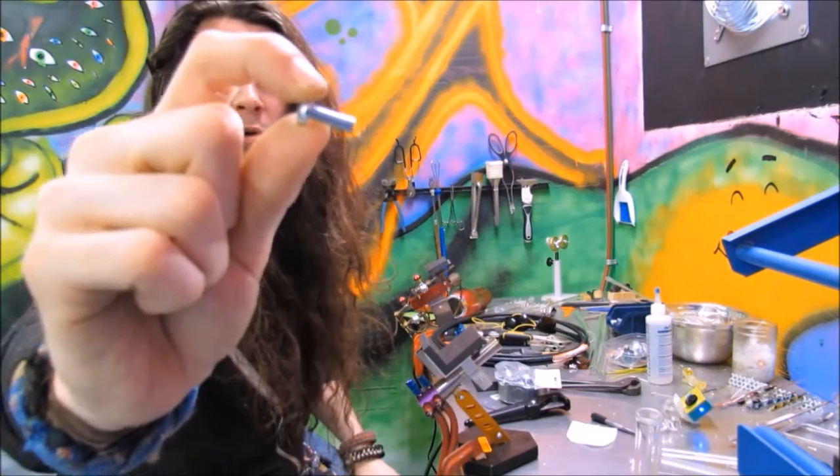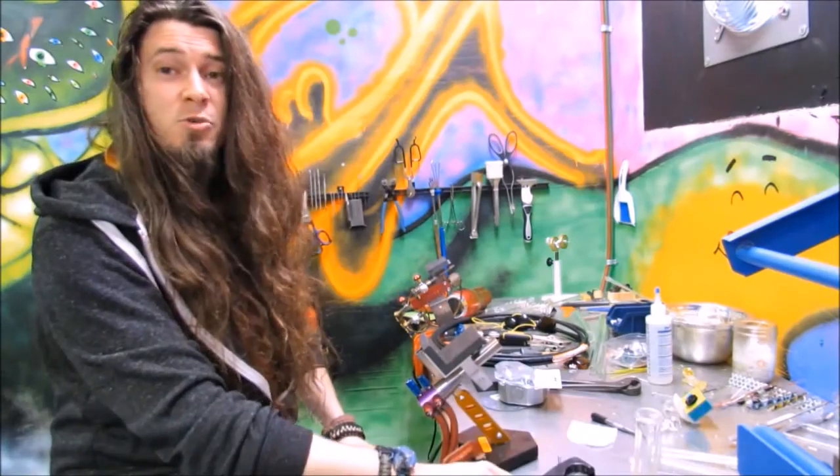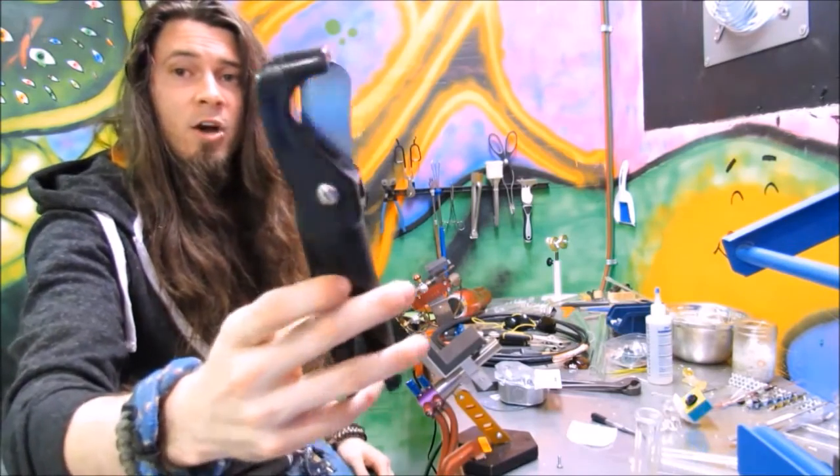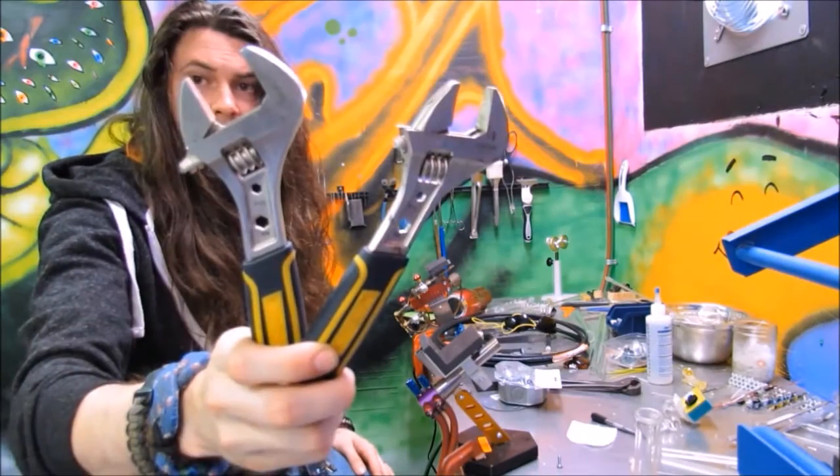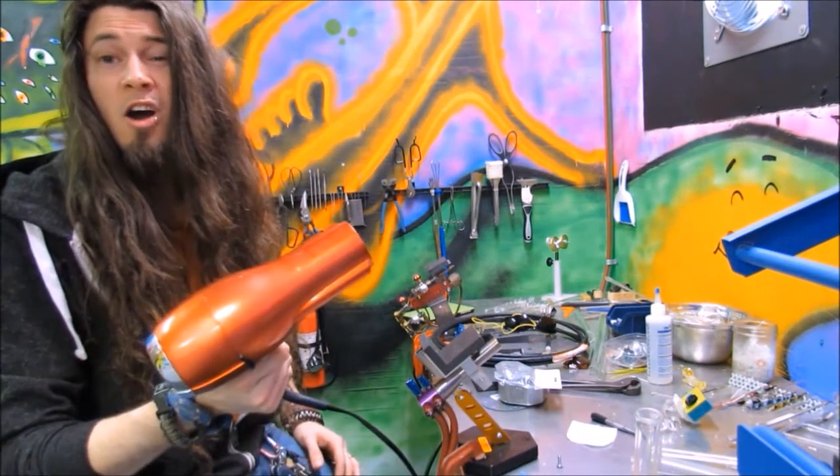The last thing is four screws to hold the solenoids onto the electrical box. Now the tools we'll need: we'll need a hose cutter, two wrenches, a screwdriver, and a hot air gun.